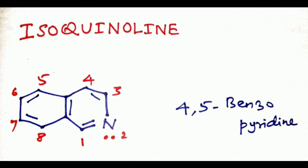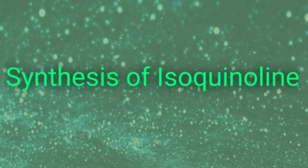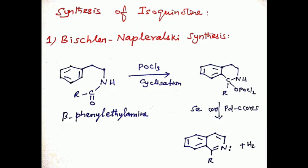Now let's discuss the synthesis of isoquinoline. First one is Bischler-Napieralski synthesis. It consists in heating acyl derivatives of beta-phenylethylamine with phosphorus pentoxide or phosphoryl chloride in boiling xylene or toluene solution.